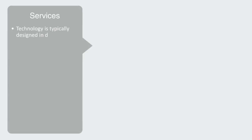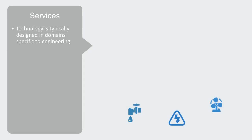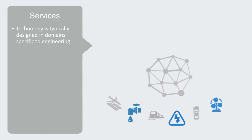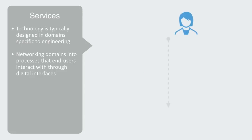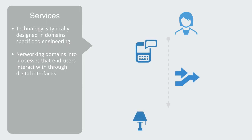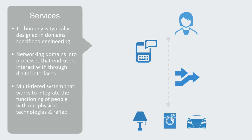Technology is typically designed in domains specific to engineering. A building may be composed of a hydraulic system, electrical system, heating, and so on. It is also the same on the macro scale, with different companies operating airports, subways, and motorways. The services revolution is about networking these technologies and domains into a process that end users interact with through digital interfaces, and this is increasingly the structure of our complex engineered systems. From end user, to digital app, to service process, to physical technology — this is the multi-tiered framework that works to integrate the functioning of people with our physical technologies, and it reflects the hierarchy of information.